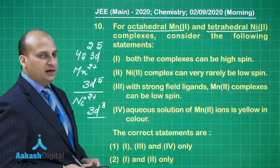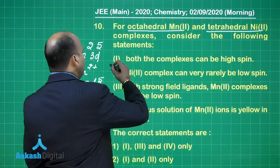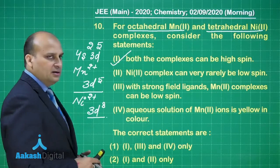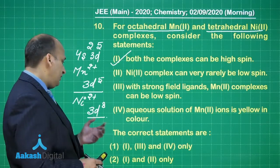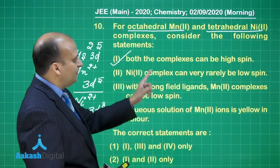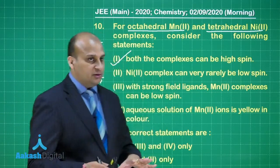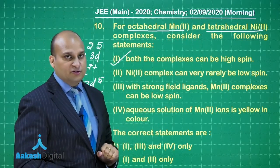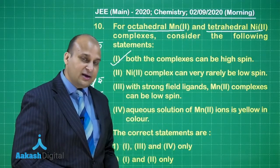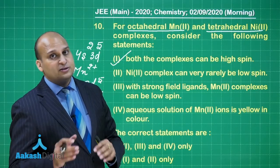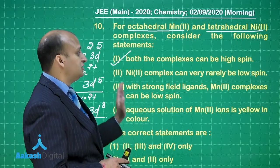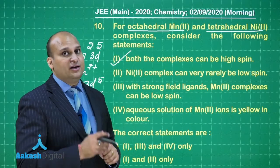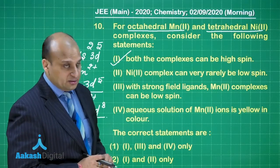Both the complexes can be high spin. Yes, if you are using a weak field ligand, it can be a high spin complex because there are 5 unpaired electrons with manganese and there are 2 unpaired electrons in the case of nickel. Now, it says Ni2+ complex can very rarely be low spin. This is very important because we are talking about tetrahedral Ni2+, which means that we are considering the tetrahedral crystal field splitting.